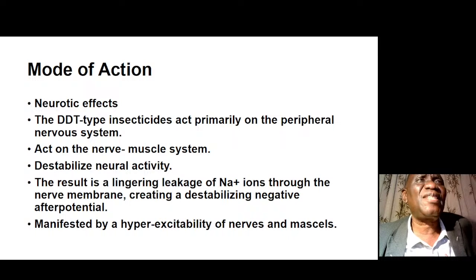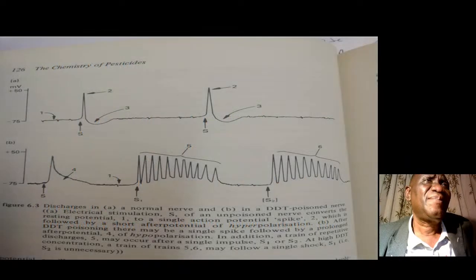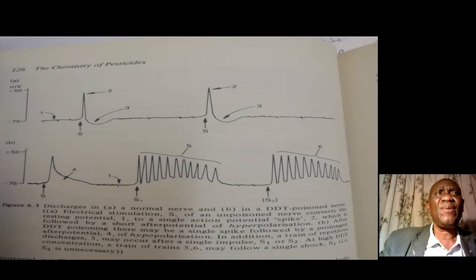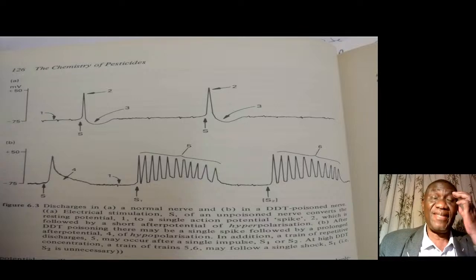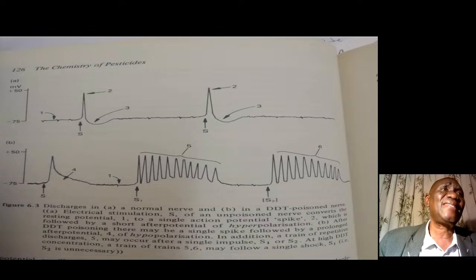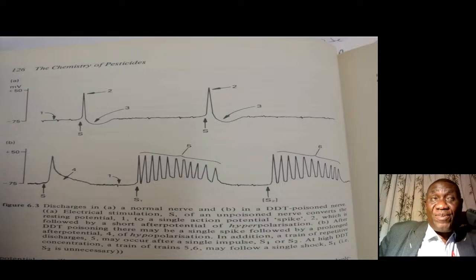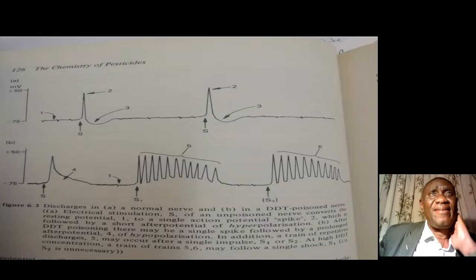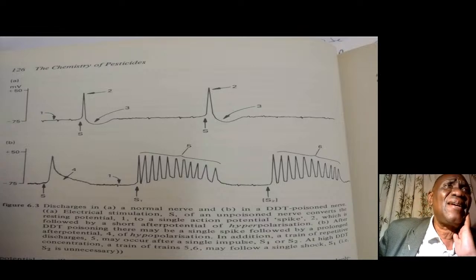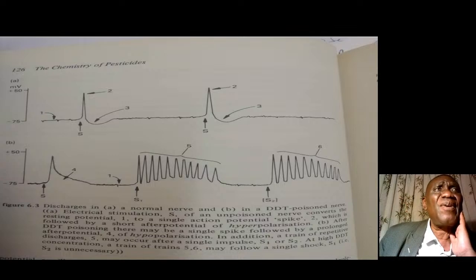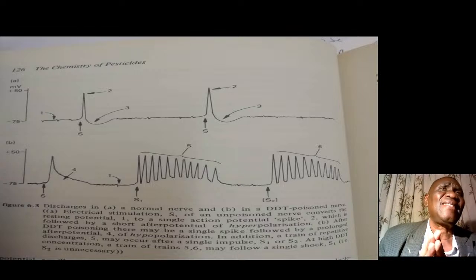The manifestation is hyperexcitability of nerves and muscles, and this is what kills the insect. We can measure these signals — without an insecticide the signal appears as normal peaks, but when an insecticide is present you see a series of many peaks close together, indicating continuous pesticide activity within the insect.